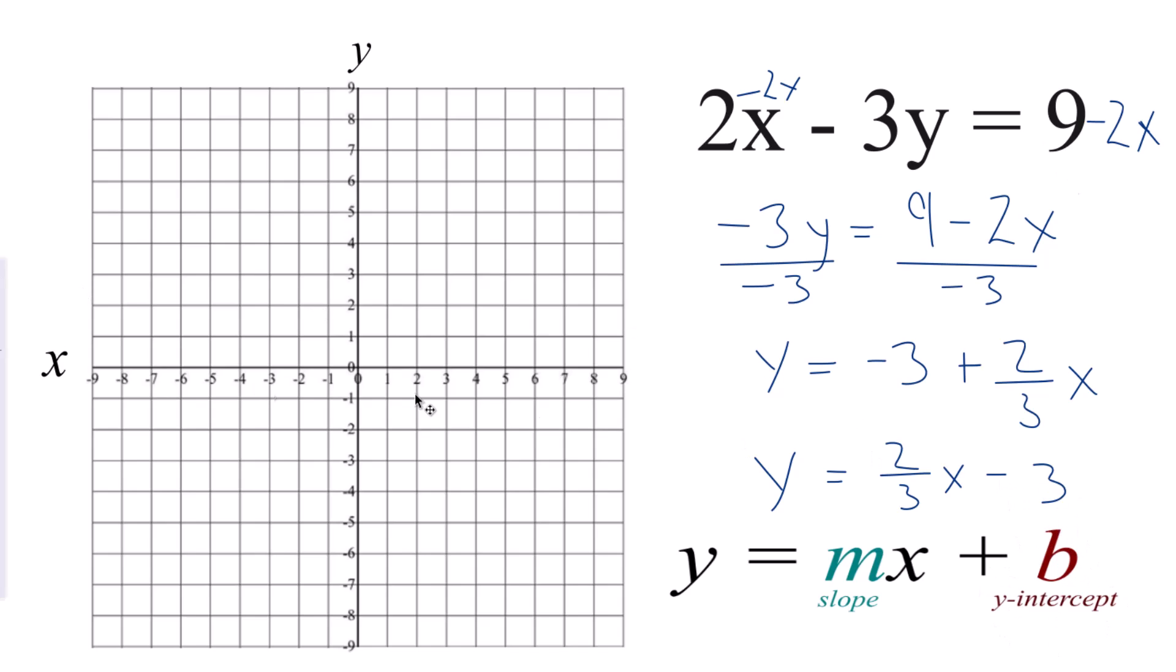B is my y-intercept. That's the negative 3. I go to the y-axis, find negative 3. That's where the line is going to intercept the y-axis.